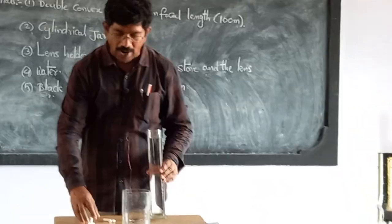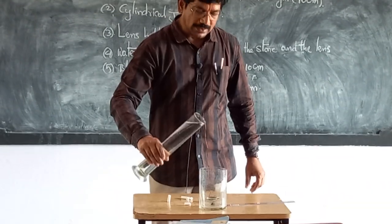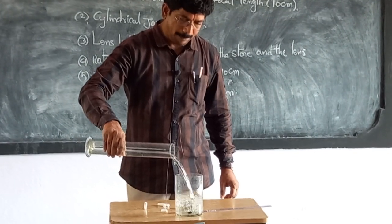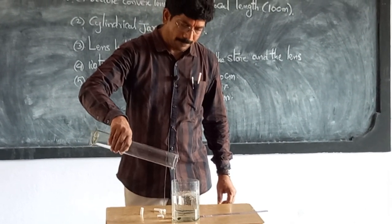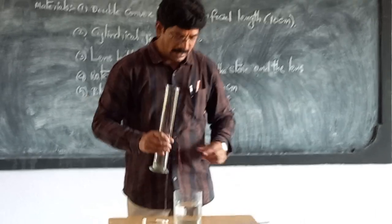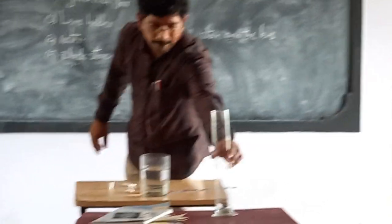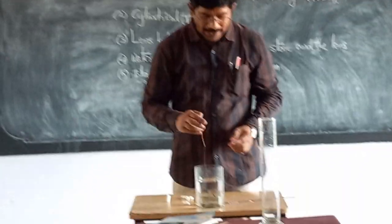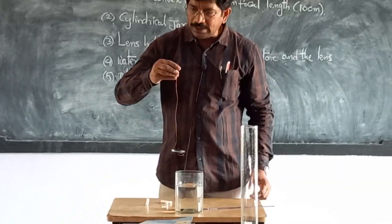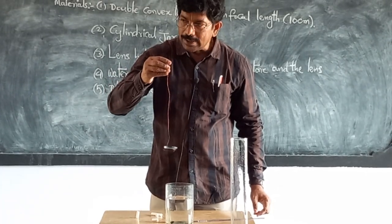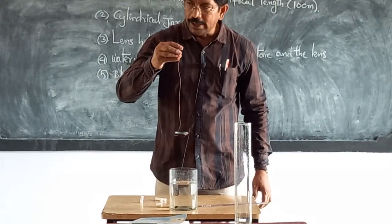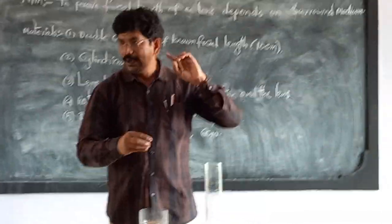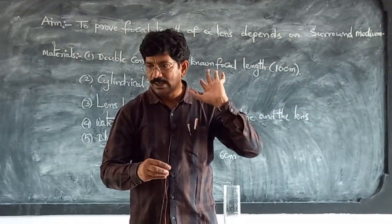Now I am pouring water into the cylindrical jar. Then I am dipping the lens into the cylindrical jar. In the beginning, when the stone is in air, the focal length was less than 10 centimeters.